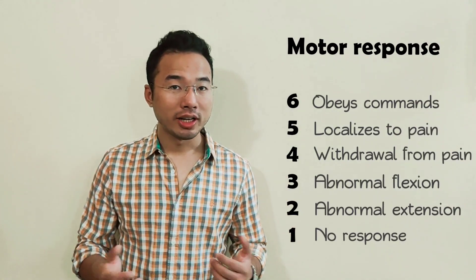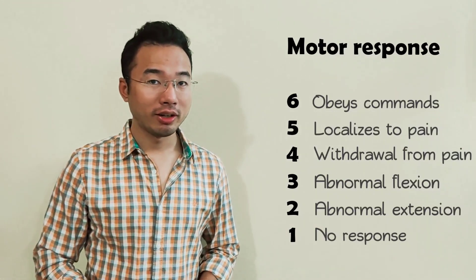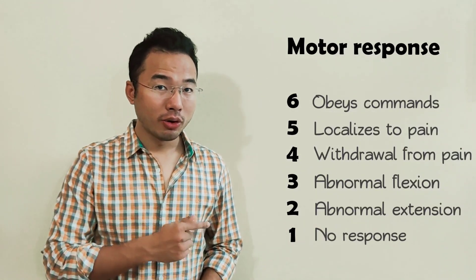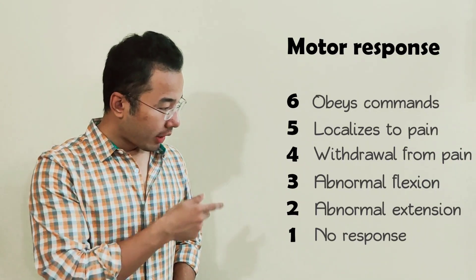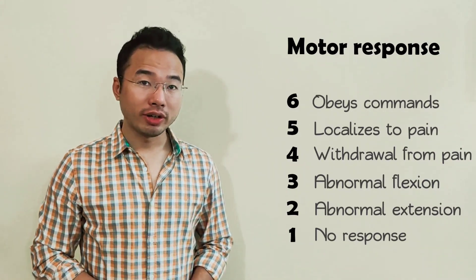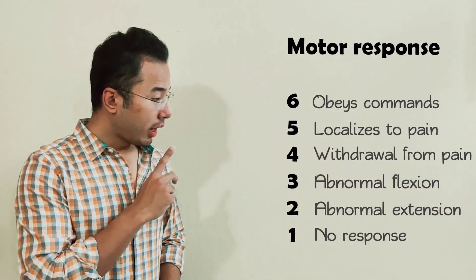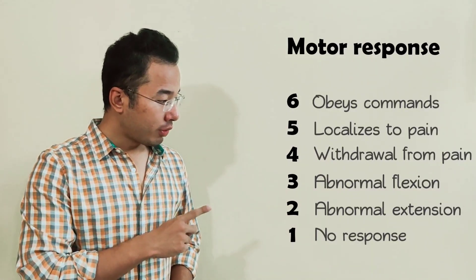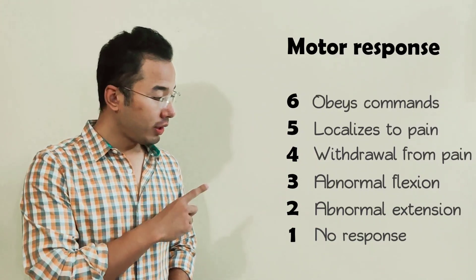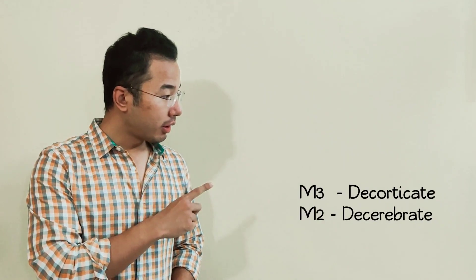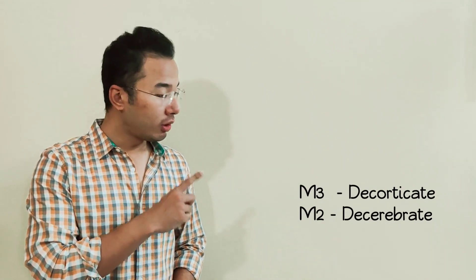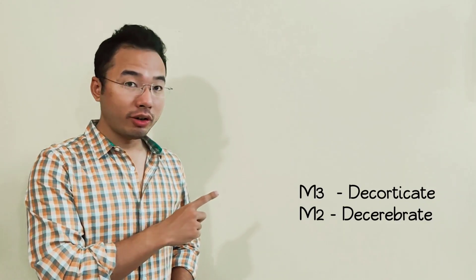I hope this helps you remember the Glasgow Coma Scale easily. What I would like to point out is, M3 is known as decorticate injury and M2 is known as decerebrate injury. How to remember this? M3 is better than M2, right? So, M3 is decorticate. Removal of the cortex of the brain is better than removal of the whole cerebrum. So, M3 is decorticate and M2 is decerebrate. That's how I remember it. Thanks for watching.